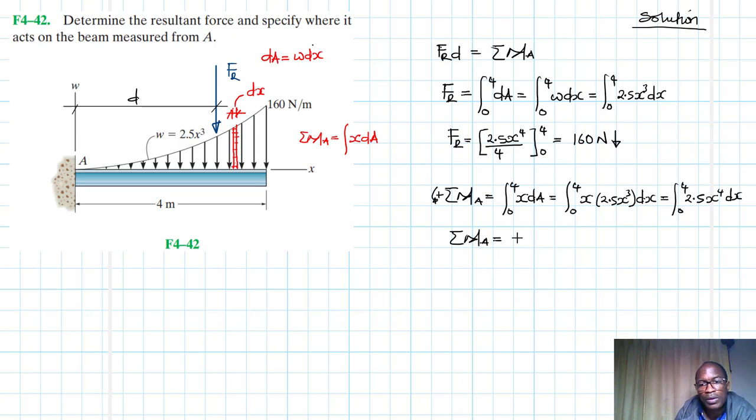Finally, integrating this, we'll find that this is going to be equal to 2.5 divided by 5 times x⁵, and we are evaluating this from 0 to 4. This is going to be equal to 2.5 divided by 5 times 4⁵. So we find 512 newton meters, and the moment is clockwise which is negative.